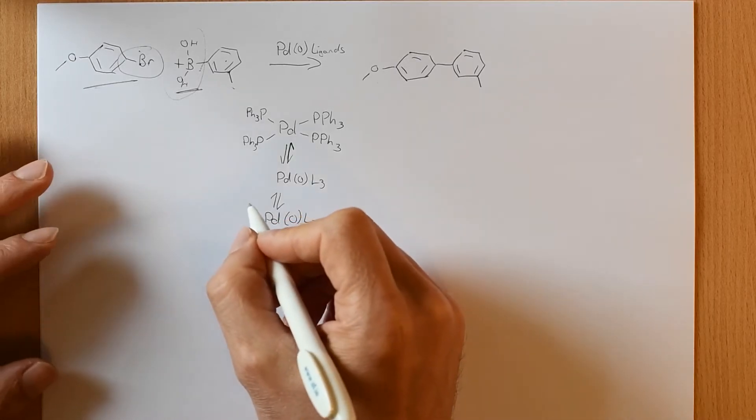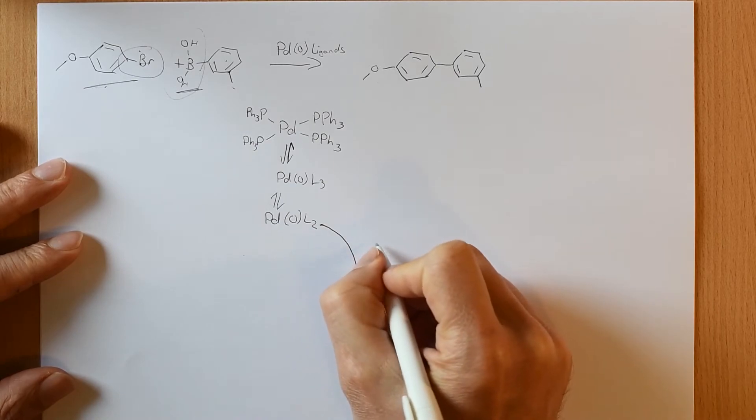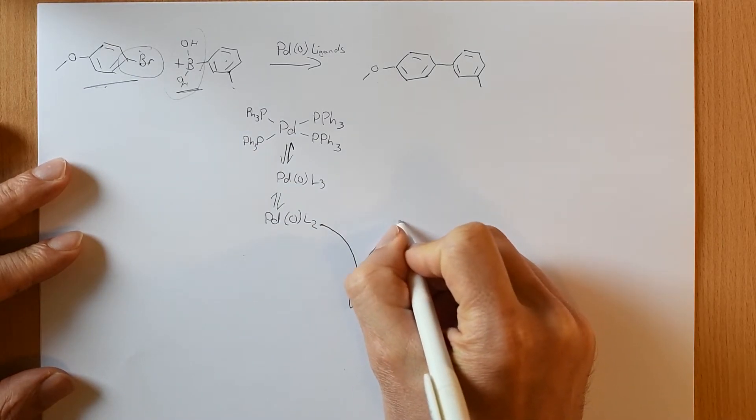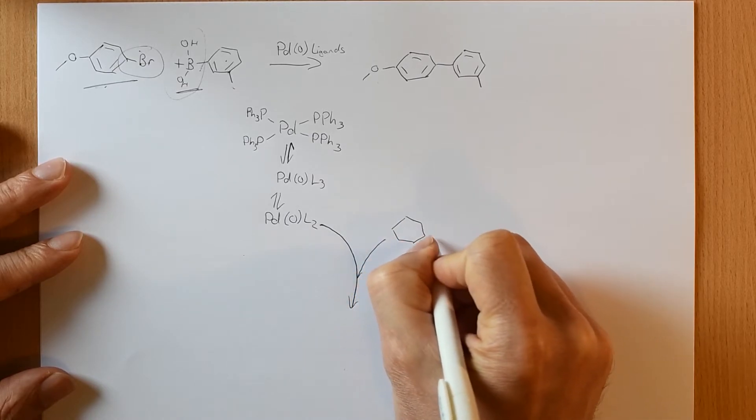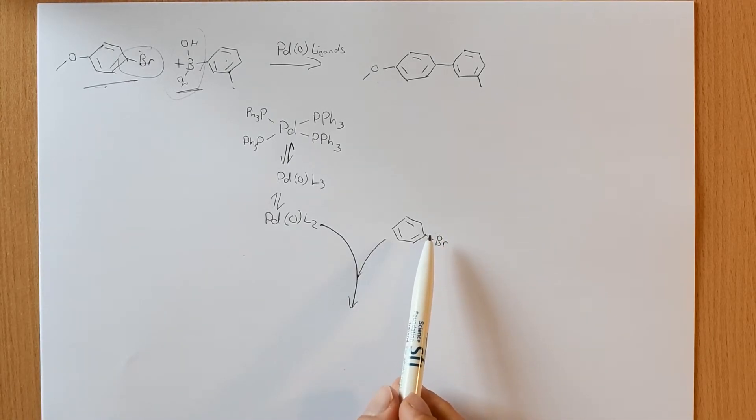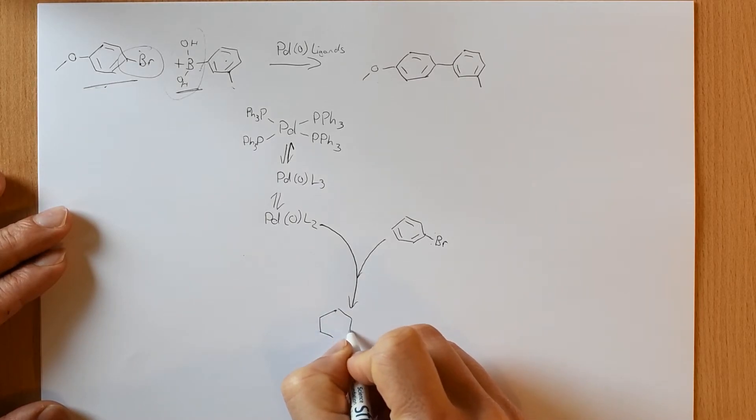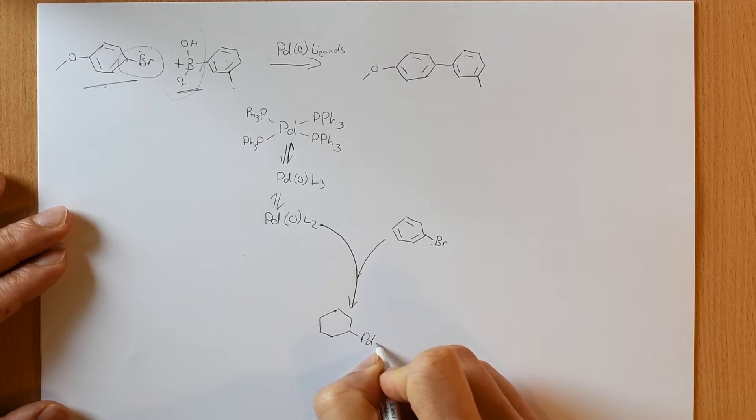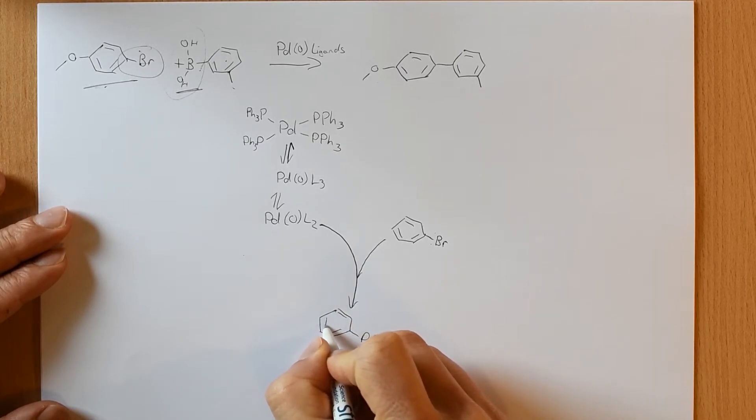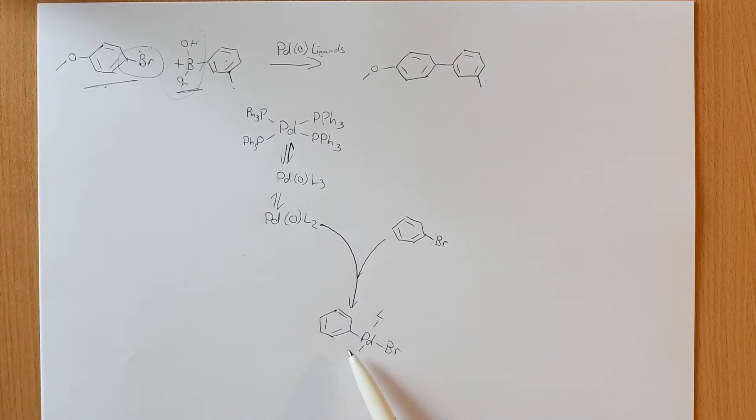And the first thing that it is going to do is oxidatively insert into a carbon halogen bond. This kind of step you have undoubtedly seen before. If you've ever seen a Grignard reagent, you'll know that if you have a carbon halogen bond like that, then if you have a metal that's willing to give its electrons away, it will happily insert into this bond. Now Palladium is not as electropositive as magnesium by any stretch of the imagination, but it will still insert into this bond. And when it does, we now have a carbon palladium, palladium bromine, and we still have our ligands attached. They are, in this case, triphenylphosphine.